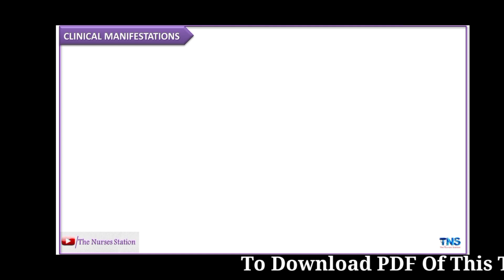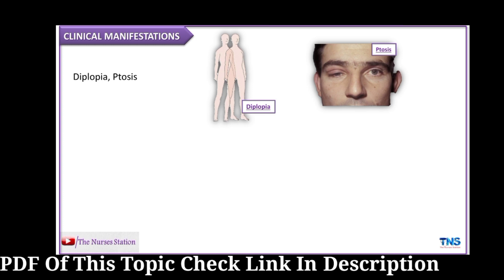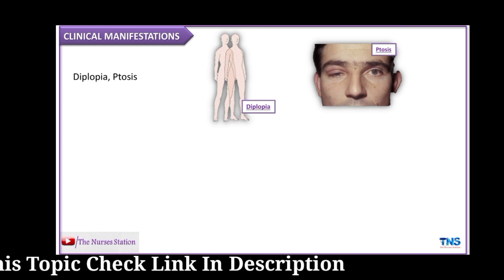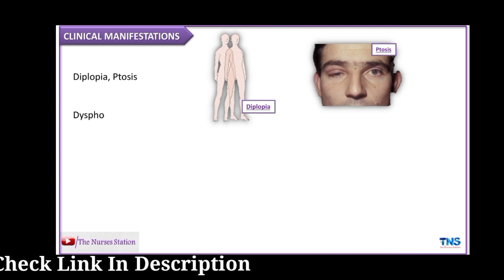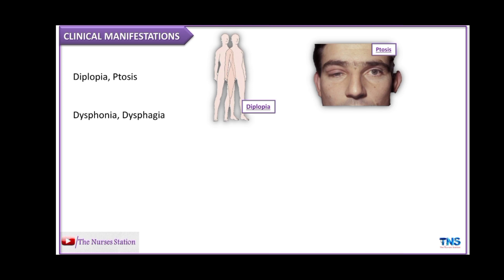The clinical manifestations in most cases start with the ocular muscles, resulting in diplopia or double vision and ptosis or drooping eyelid. Laryngeal muscle involvement may result in dysphonia, which is voice impairment, and dysphagia, which is difficulty swallowing. This increases the chances of choking and aspiration.